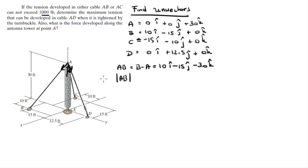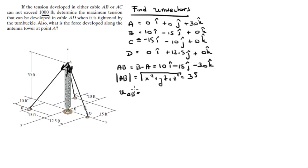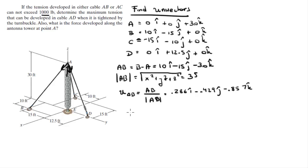Then find the magnitude of this vector: square root of (10² + 15² + 30²), which gives a magnitude of 35. The unit vector AB is the vector divided by its magnitude, giving (0.286i − 0.429j − 0.857k).